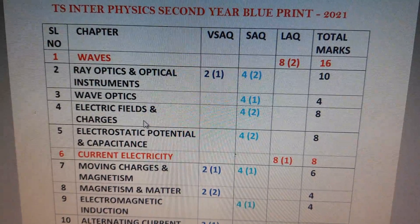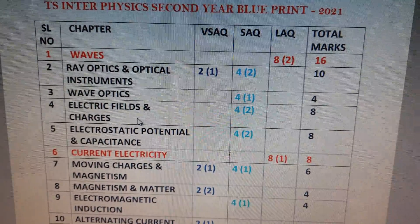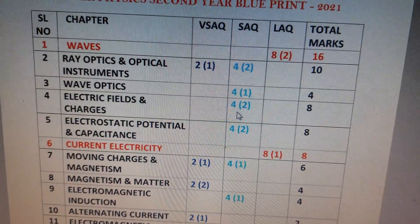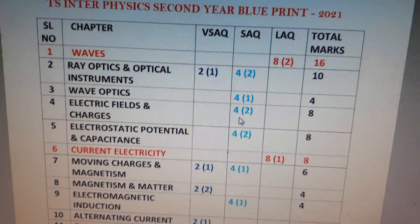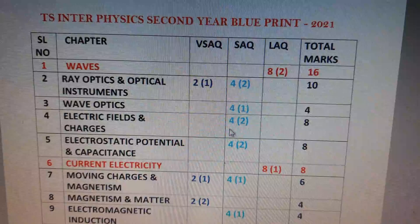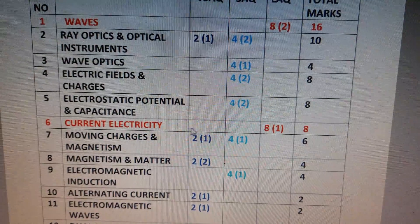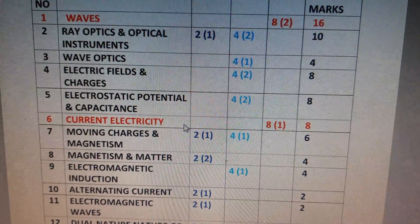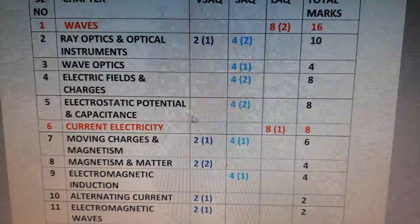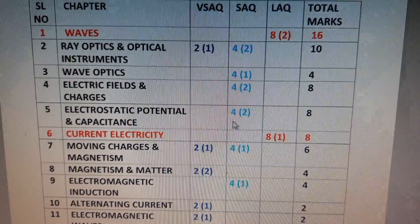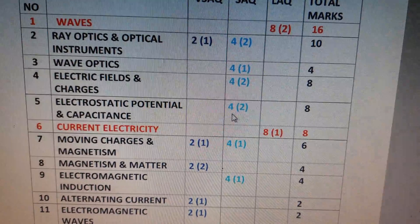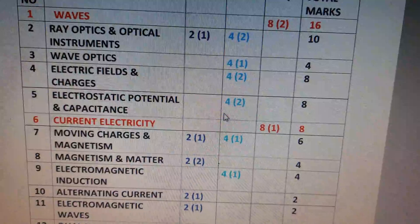The fourth chapter is Electric Field and Charges. The weightage will be 8 marks — there will be two 4-mark questions in the IPA examination. The fifth chapter is Electrostatic Potential and Capacitance. There will also be two 4-mark questions, so the total weightage of this chapter is 8 marks.